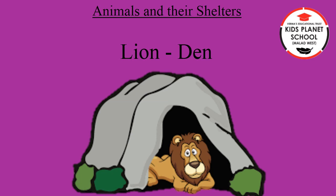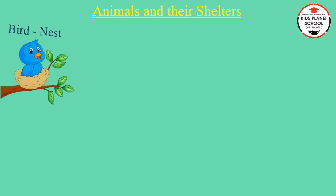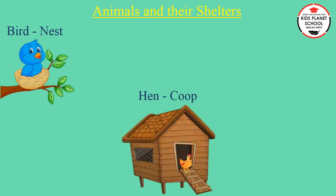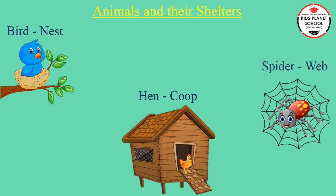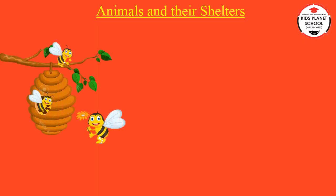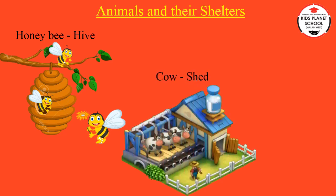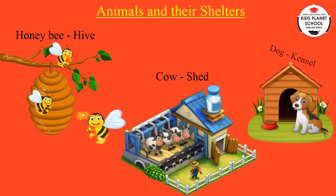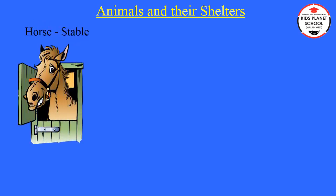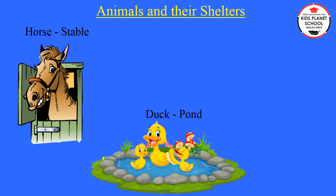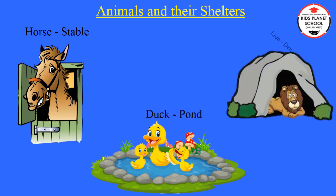We will revise it one more time. Bird lives in a nest. The hen lives in a coop. The hen lives in a coop. Lion lives in a den. So this was the topic, animals and their shelters.